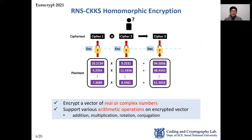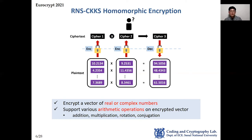Among FHE schemes, the RNS-CKKS homomorphic encryption scheme is one of the most useful now. Unlike other FHE schemes for Boolean or integer data, RNS-CKKS is optimized to deal with real number data. It supports various arithmetic operations on encrypted data, such as addition, multiplication, rotation, and complex conjugation. Since many practical systems—including machine learning systems—use real numbers, RNS-CKKS is an appropriate choice.